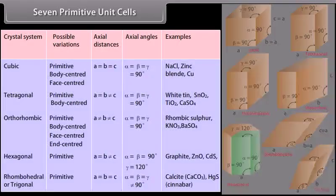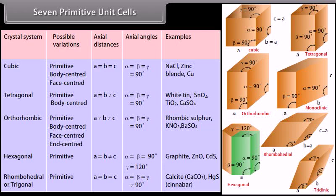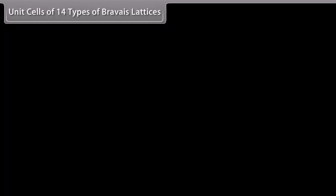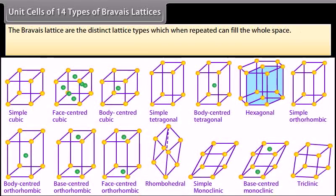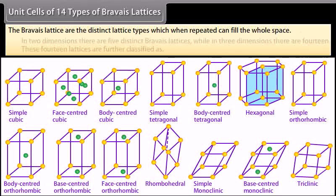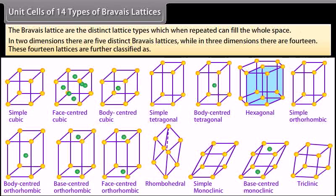There are 7 types of primitive unit cells. Their characteristics along with the centred unit cells they can form have been listed in the table. The Bravais lattices are the distinct lattice types which, when repeated, can fill the whole space. In 2 dimensions there are 5 distinct Bravais lattices, while in 3 dimensions there are 14.